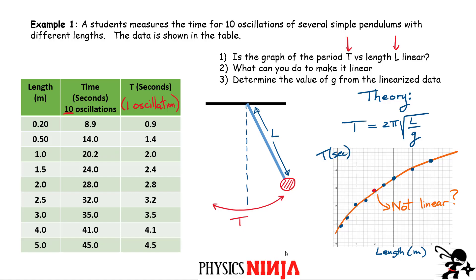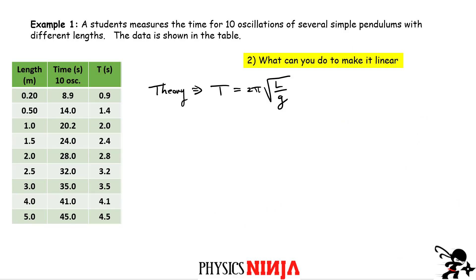We have to plot different things on the y and x axes — we can't just plot period and length because that's definitely not linear. We need to look at the transformation we have to make to this equation. For something to look like a straight line, remember what a straight line equation looks like: y equals mx plus b. Since I have a square root term, this is definitely not linear. For something to be linear, the exponent has to be one.